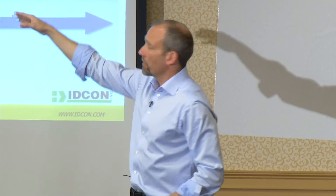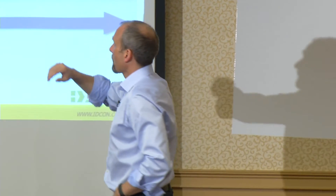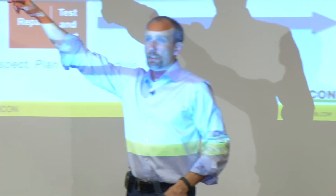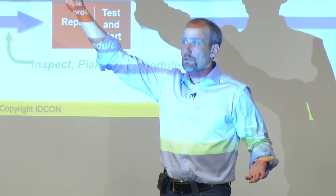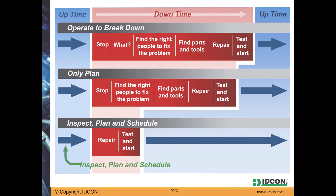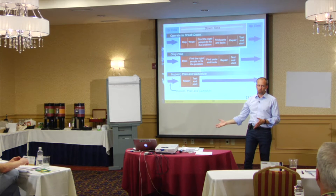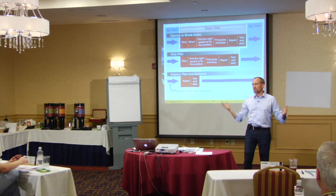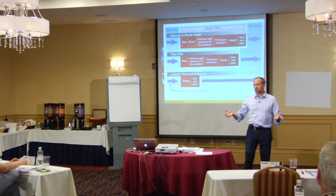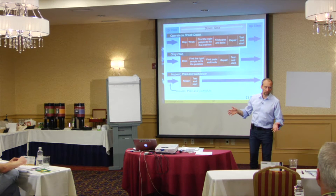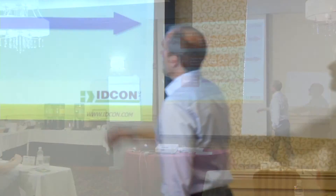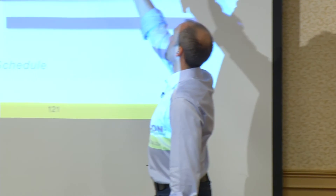If you look at a typical operate-to-breakdown job, the equipment stops and you need to figure out what happened — that can take a while. You need to find the right people to fix the problem. Maintenance crews are usually only here 40 hours a week out of 168 hours, so there's about a 72% chance that the full maintenance group is not there when something happens. Equipment doesn't know what time of day it is. Then we find parts and tools needed to repair it, and we test and start.